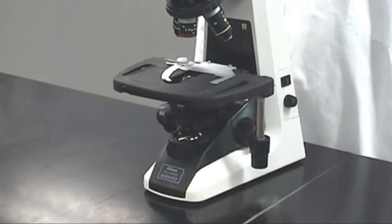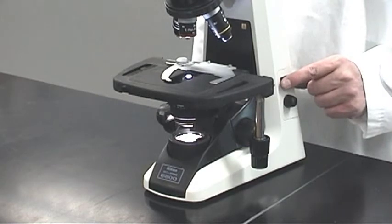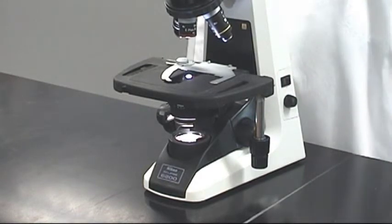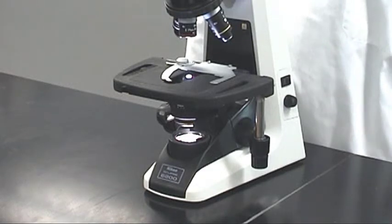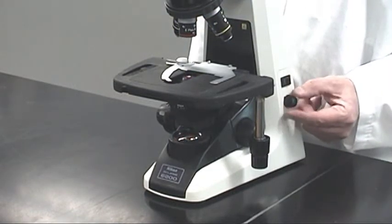The light switch, located on the left, turns on the lamp. The rheostat, or voltage control knob, is just below the light switch. Rotating it changes the intensity or brightness of the lamp.